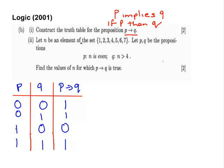Now let N be an element of the set {1, 2, 3, 4, 5, 6, 7}. Let P, Q be the propositions as follows: P is N is even, and Q is N is greater than 4. So what we're going to do now is write out that truth table. I'm going to set it up here: N equals 1, 2, 3, 4, 5, 6, and 7.